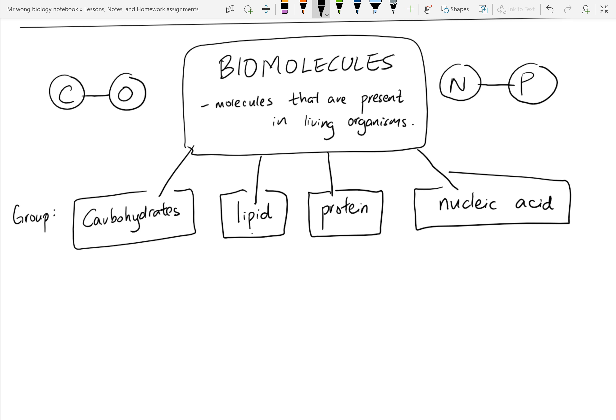So to build carbohydrates, lipid, protein, or nucleic acids, these are all biomolecules. It means that they are big molecules for living organisms. So you need some sort of basic building blocks. The elemental building blocks that we have are carbon, oxygen, nitrogen, and last but not least, phosphorus.